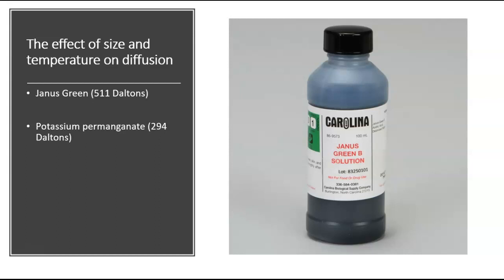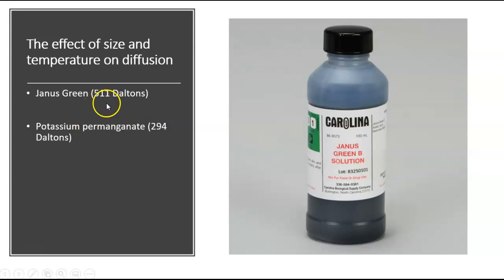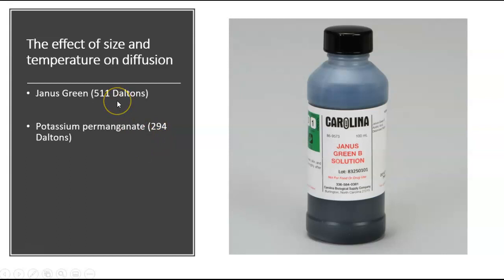In this experiment, you have two different dyes: Janus Green and potassium permanganate. Their molecular weight is different — Janus Green is 511 daltons and potassium permanganate is 294 daltons. Janus Green obviously has a higher molecular mass. Therefore, we can hypothesize that it will diffuse slower than potassium permanganate.